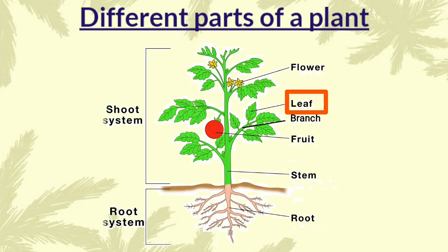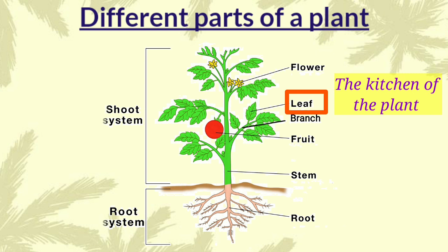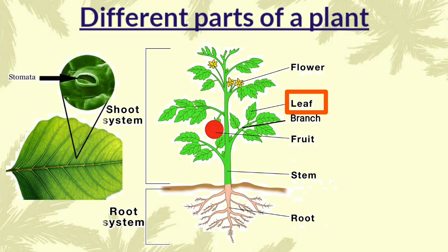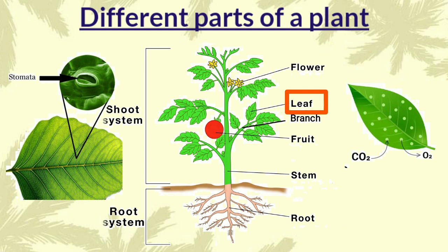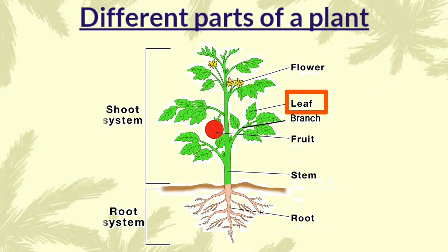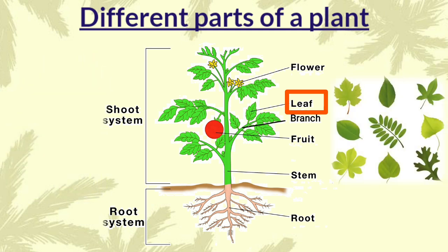Leaf. Leaf is green in color. Do you know children, leaves are called the kitchen of the plant? Because it absorbs sunlight from the sun and makes food for the plant. Therefore, it helps the plant to grow healthier. You know, leaves have small openings called stomata, through which plants take in carbon dioxide and give out oxygen. Leaves can be of different shapes and sizes.